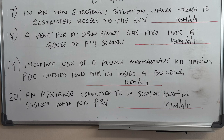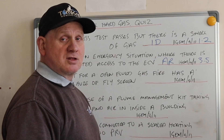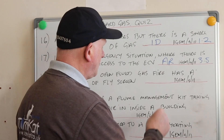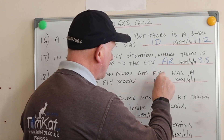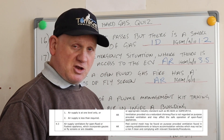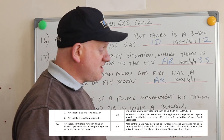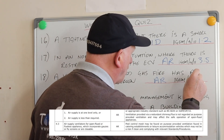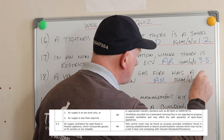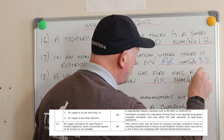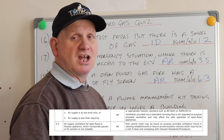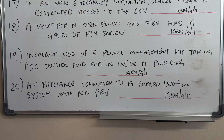Question eighteen: a vent for an open flued gas fire has a gauze or a fly screen. Hopefully you said it's 'at risk,' and if you want to know where it is, it's at section 4.3 of the IGEM G11.